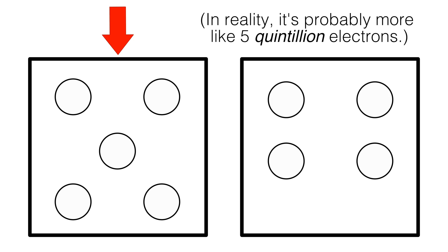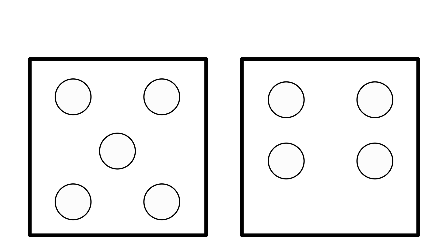If there are five electrons over here and four electrons over here, there is a clear difference in charge between these two objects. What is the voltage?